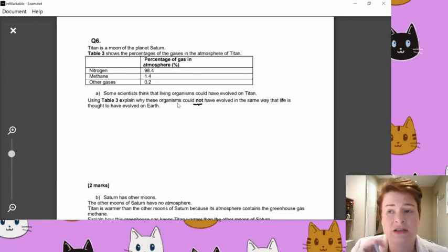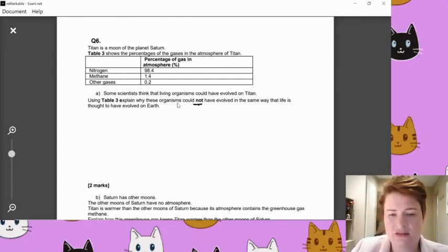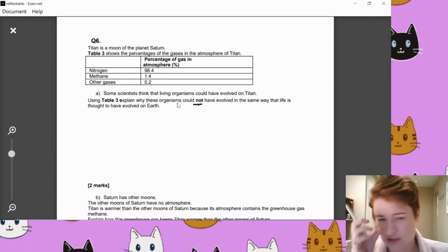Some scientists think that living organisms could have evolved on Titan using Table 3. Some of you said it was Table 1, Table 3. That's my fault. I don't know why ExamNet didn't accept my changes, but it didn't. Never mind. Why these organisms could not have evolved the same way that life is thought to have evolved on Earth. So evolution of the atmosphere, it was something like the second lesson that we did, maybe even the first lesson that we did. And we did the little storyboard.